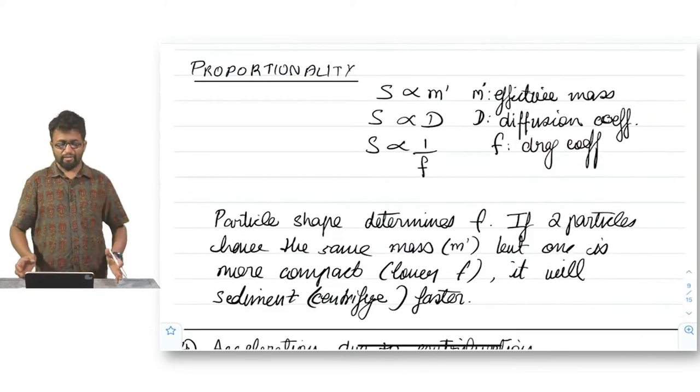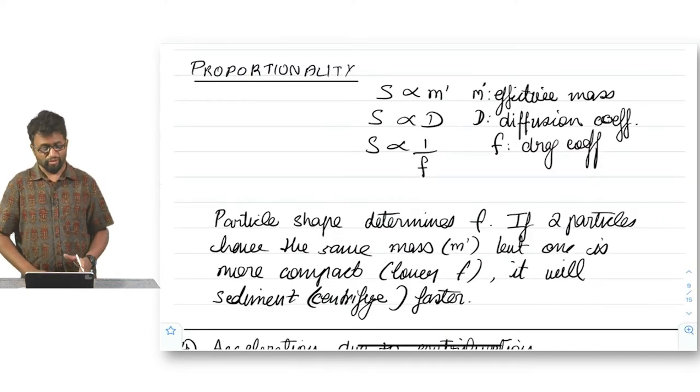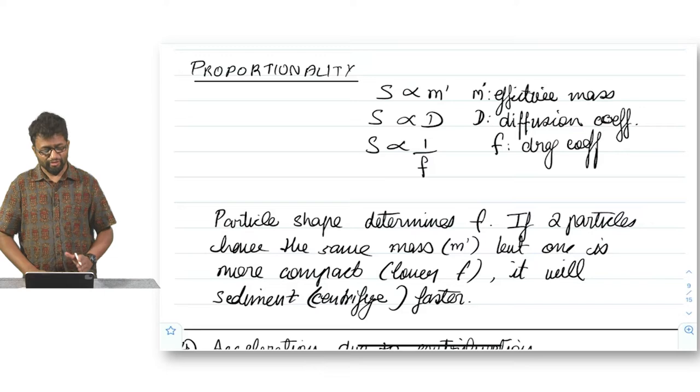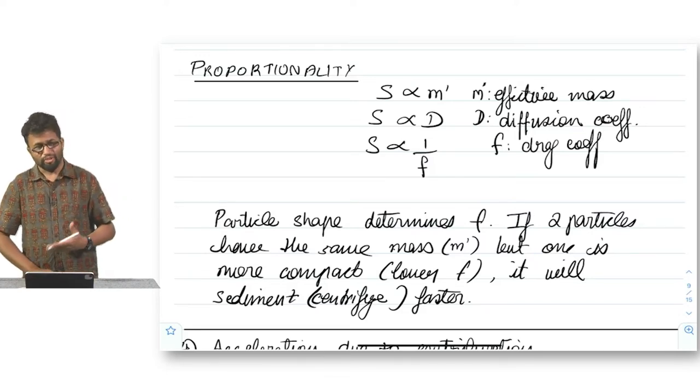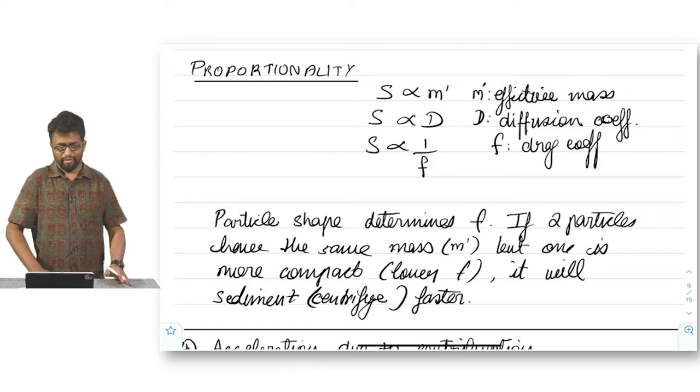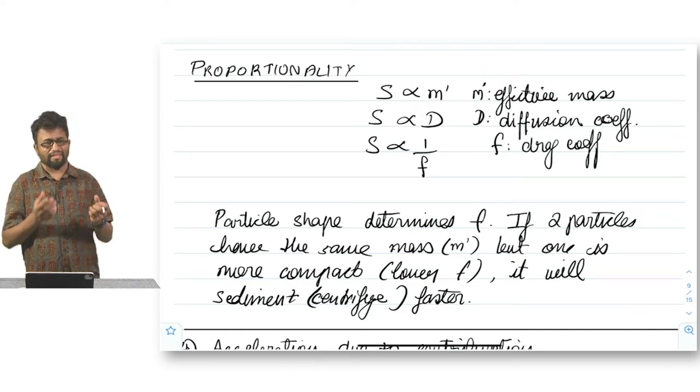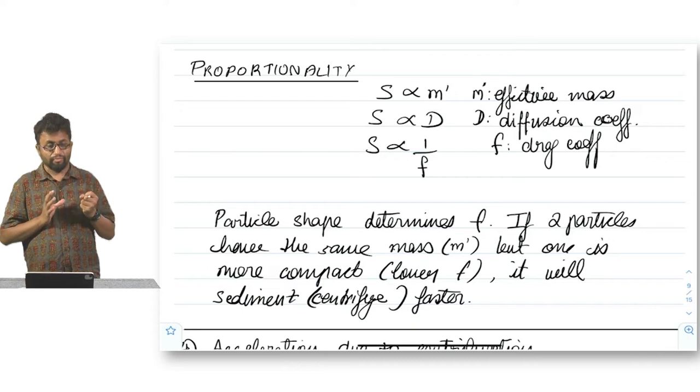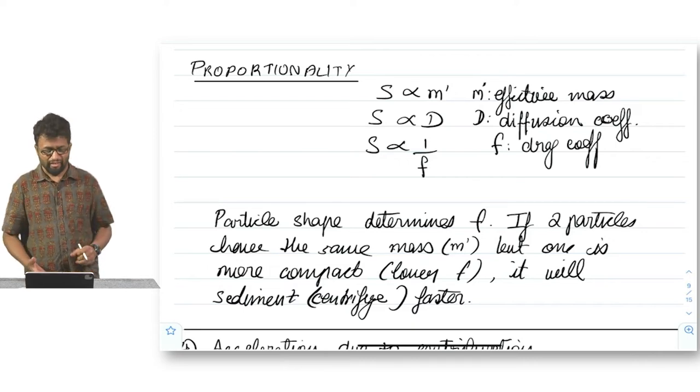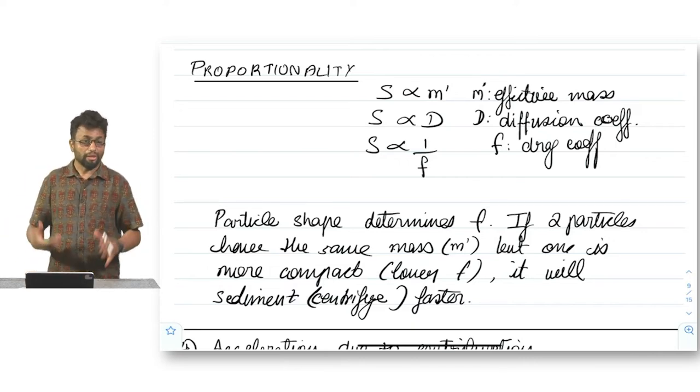So to summarize, the proportionality of the Svedberg unit, the Svedberg constant is directly proportional to the effective mass, directly proportional to the diffusion coefficient and inversely proportional to the drag coefficient. In a sense, the drag coefficient is a measure not just of the viscosity, but also the shape of the object. So if two particles have the same effective mass, but one is more compact than the other, then it will have a lower effective drag coefficient and therefore it will be faster at sedimenting or a higher S rate because of the shape of the object itself.